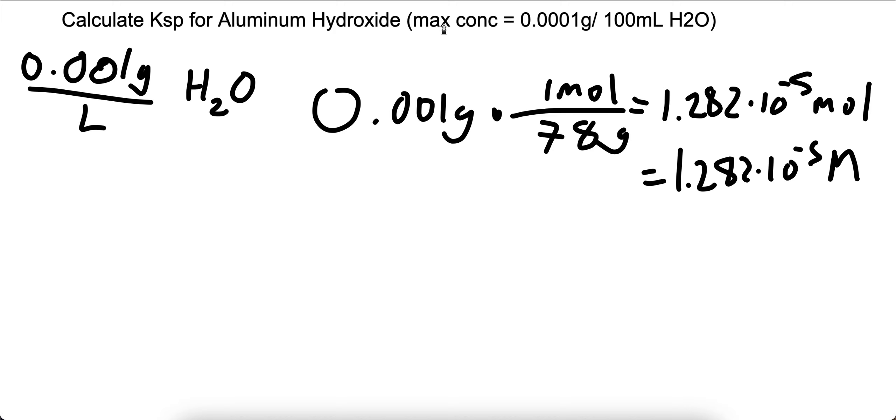Now since Al and OH have different ratios to the entire compound, we'll have to multiply by different factors. For Al, we know Al to Al(OH)3 is a 1 to 1 ratio, so it's 1.282 times 10 to the negative 5th molar.